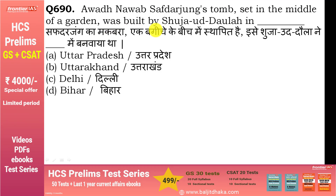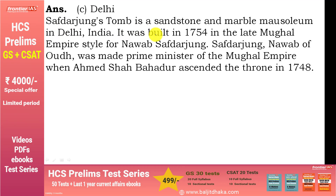Awadh Nawab Safdarjung's tomb, set in the middle of a garden, was built by Shuja-ud-Daula — option C, in Delhi. यह sandstone और marble का मकबरा है, 1704 में बनवाया गया था, late Mughal Empire की architecture style में. सफदरजंग को Nawab of Awadh (Oudh का पुराना नाम है) बनाया गया था, और फिर Ahmad Shah Bahadur ने 1748 में गद्दी संभालने पर उन्हें Mughal Empire का Prime Minister बनाया.